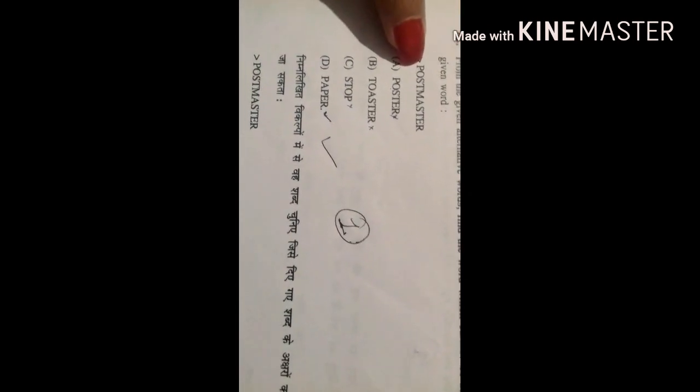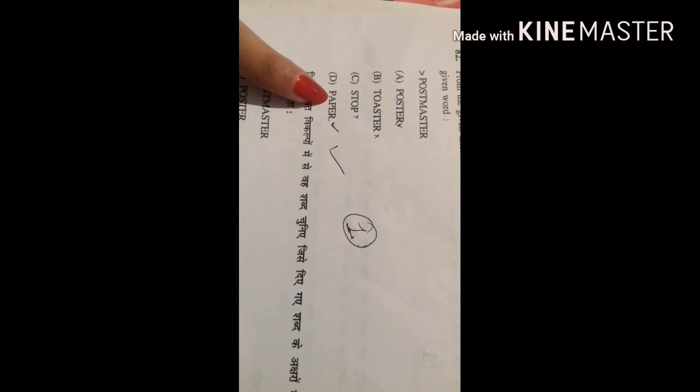And next one is 82. 82nd question: form the alternative words. We have to find those words which cannot be made by the word postmaster. So the correct answer is D, paper, because it has double P while in postmaster there is only one P. So it cannot be made from this. So option number D was the correct answer for 82nd question.